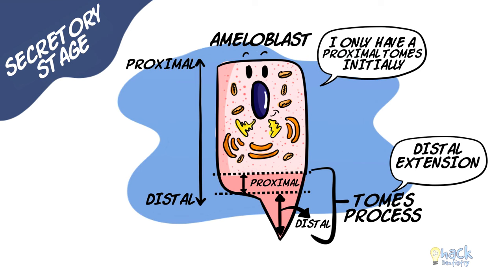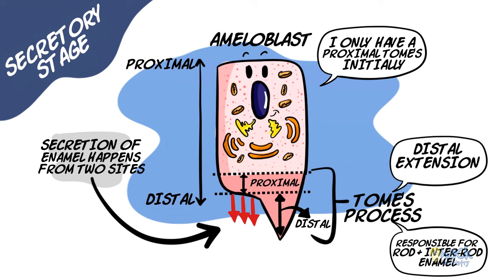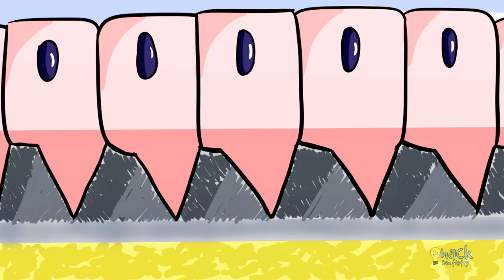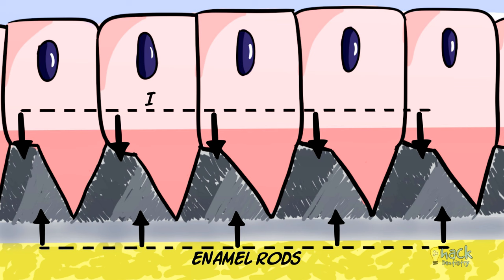Rod and inter-rod enamel is a result of the Tomes' process. When the distal portion of the Tomes' process is developed, secretion of enamel happens from two sides: from the proximal portion and from the distal portion. The enamel matrix secreted by the proximal portion encircles or surrounds the enamel matrix secreted by the distal portion. The enamel matrix secreted by the distal portion forms the enamel rod, and that which surrounds the rod is called the inter-rod enamel.